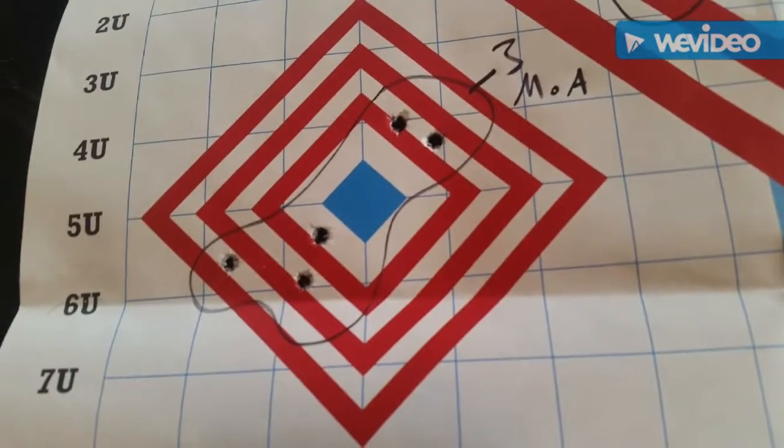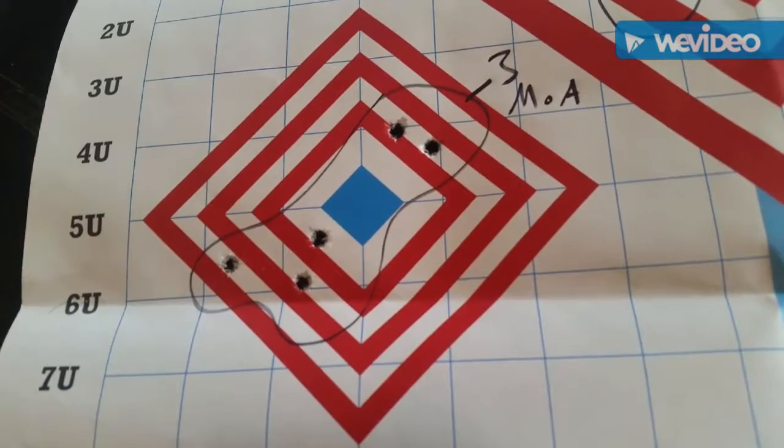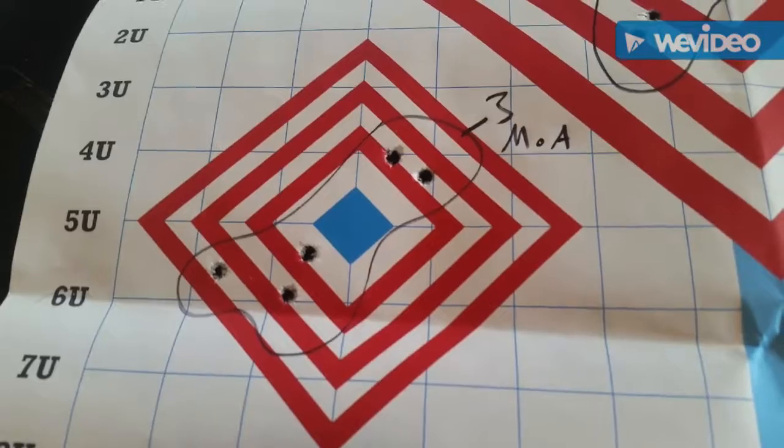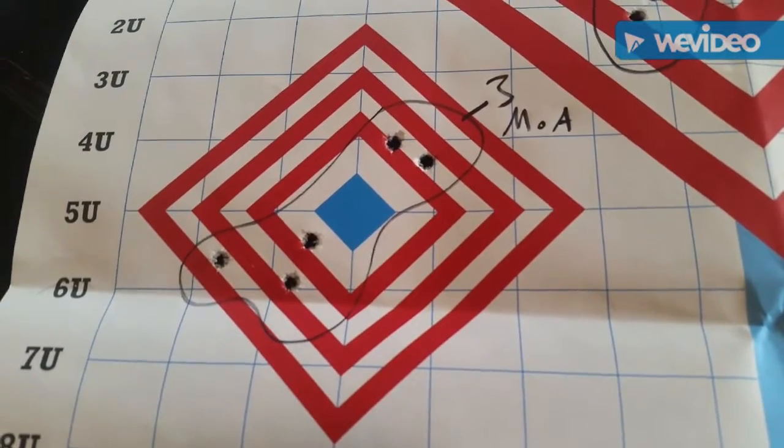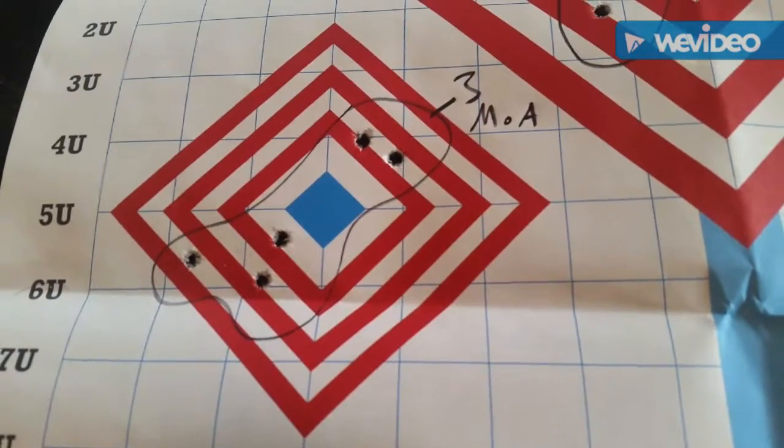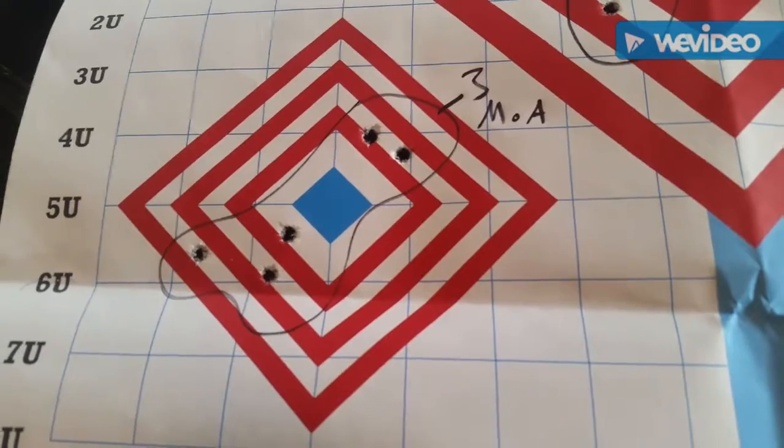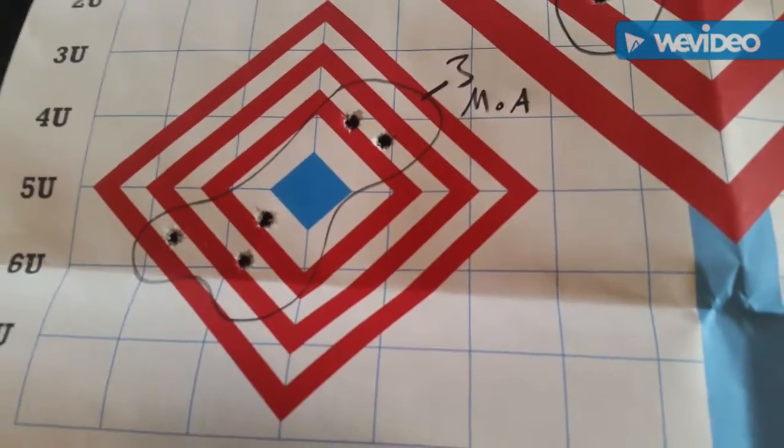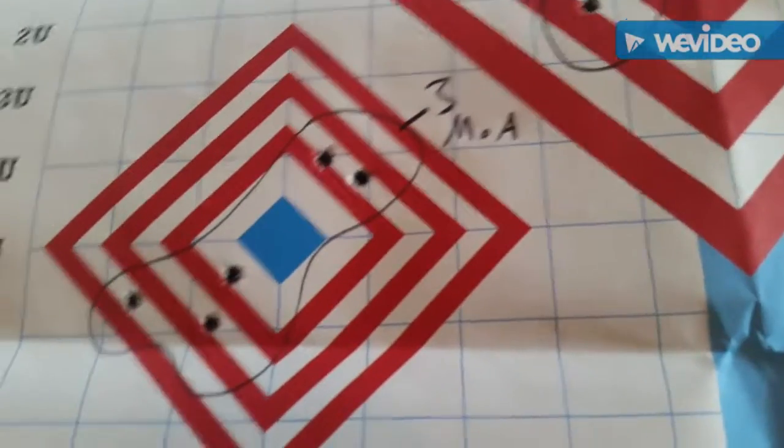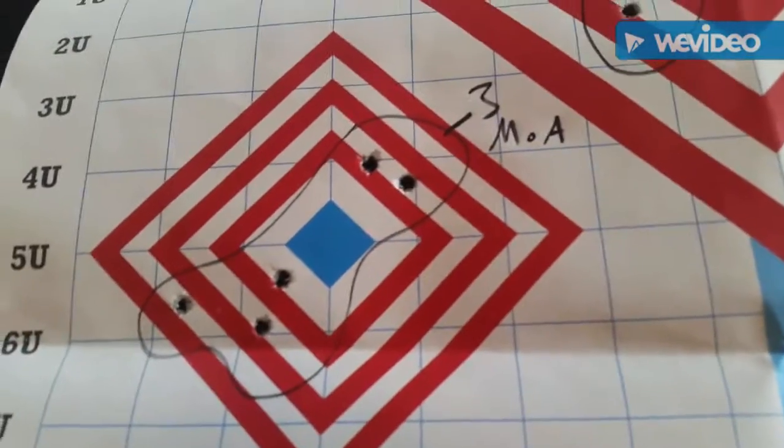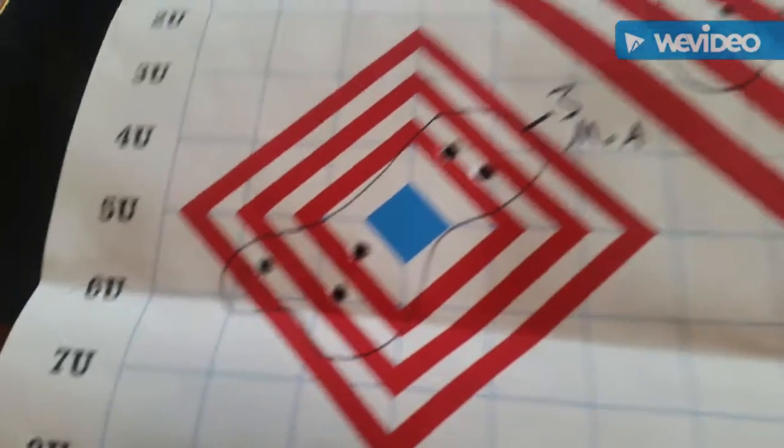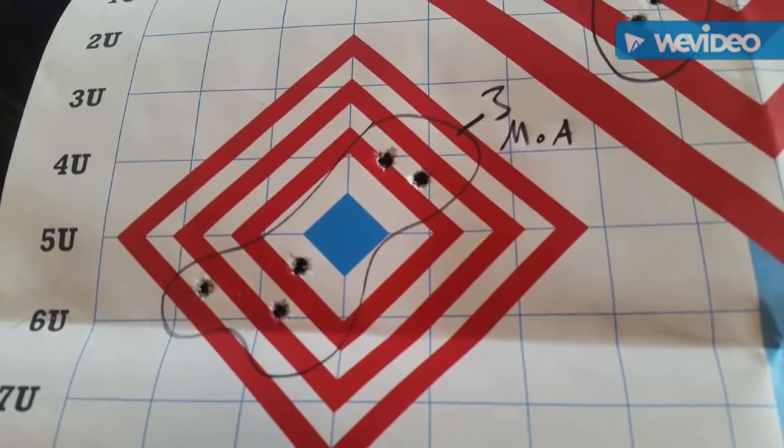We had a three MOA group. What I thought was interesting about this group is it was actually two separate groups. I shot a five-round string because that's how I shoot all my groups. They say a three shot group is a coincidence, five shots is a group. I have a really nice probably one MOA group right there, but unfortunately those two guys open it up to about three MOA.